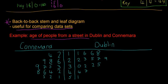The example we have is the age of people from a street in Dublin and Connemara. On the left we have Connemara, on the right we have Dublin. In the middle we have our stem like last time, and on the right and left we have our leaves. You can see the slight difference in the data—there's more people up here in Dublin and more people down here in Connemara, so people are slightly younger in Dublin than in Connemara in this example.